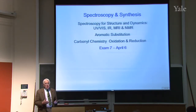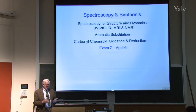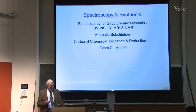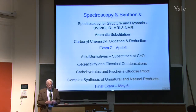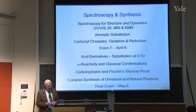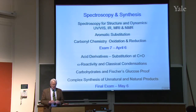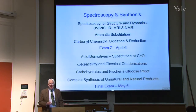Then there'll be an interlude about spectroscopy and more focus on synthesis. First, spectroscopy for structure and for studying dynamics of molecules and reactions: ultraviolet-visible spectroscopy, electronic IR spectroscopy for vibration, which we've talked about a good deal already, and magnetic resonance imaging and nuclear magnetic resonance. Then on to aromatic substitution. Finally, carbonyl chemistry and the concepts of oxidation and reduction. Then we'll have the third hour exam. The last quarter will cover carbonyl chemistry, acid derivatives, substitution at the carbonyl group, reactivity adjacent to the carbonyl group, the classical condensation reactions, carbohydrates and Fischer's classical proof of which isomer is which of glucose, and finally some complex synthesis — both unnatural and natural products. Then we'll have the final.